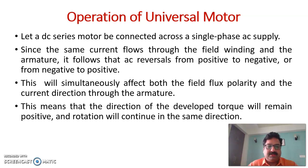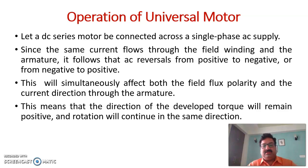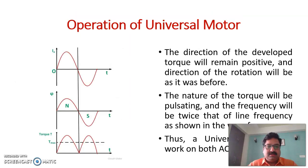To conclude while discussing the operation: if a DC series motor is connected across a single-phase AC supply, the current flows through the field winding and the armature following the AC reversal from positive to negative and back. The current direction and flux polarity work together such that the direction of the developed torque will remain positive and the machine rotation will continue in the same direction. The direction of the developed torque will always be in the same direction.